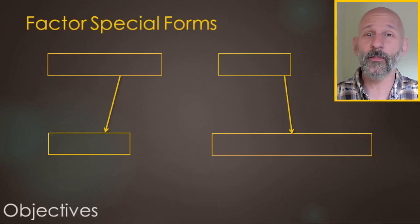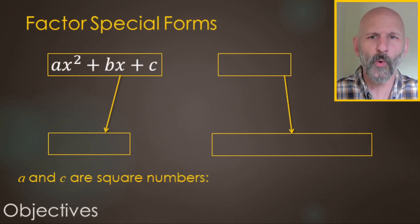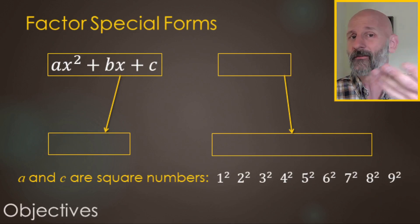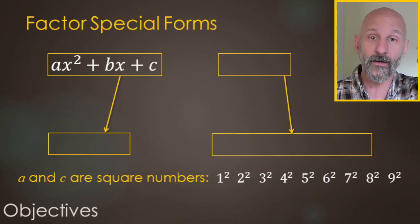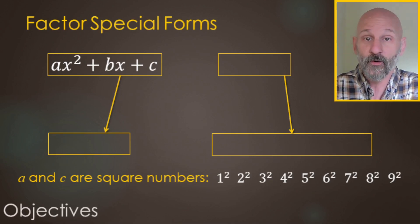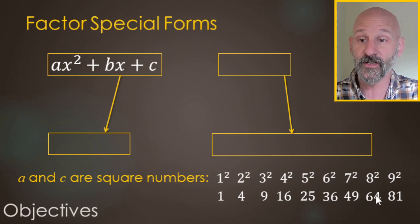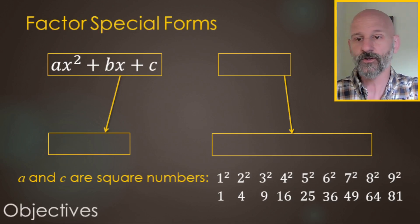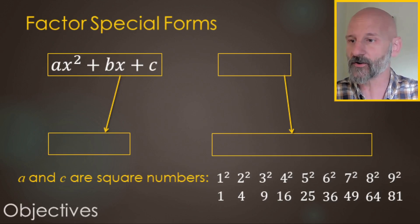In this video we are going to be working with some special forms. These special forms are going to have perfect squares in them. So what are perfect squares? Here's your list — this is right down the diagonal of your multiplication table: 1 squared, 2 squared, 3 squared, 4 squared, 5 squared, and on and on. Those equal 1, 4, 9, 16, 25, 36, 49, 64, 81, and the list keeps going. Those are your perfect squares.